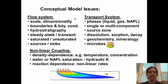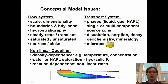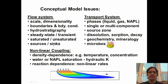Some conceptual model issues with respect to the flow system: we need to address the scale and dimensionality — how big a domain do we need, how many dimensions, where will our boundaries be, and what will the boundary conditions be? The hydrostratigraphy — how many layers do we need to include, do we need to include all the heterogeneities? Can we simulate a steady-state system or do we need a fully transient system? Can we simplify the unsaturated zone or stay with the saturated zone only? And do we have wells or surface water boundaries?